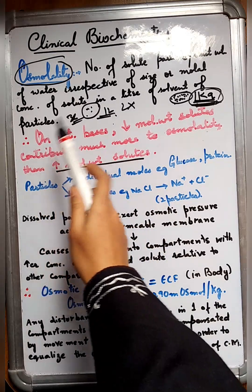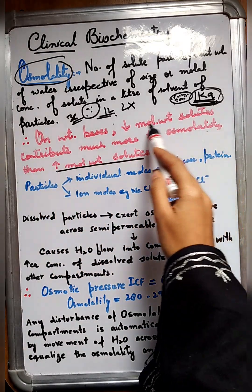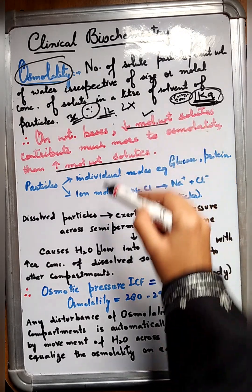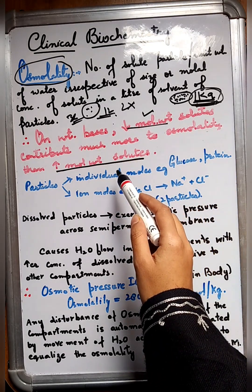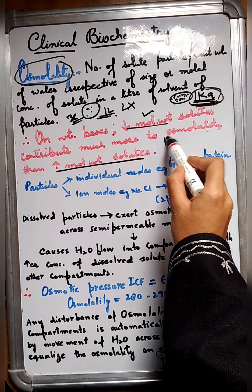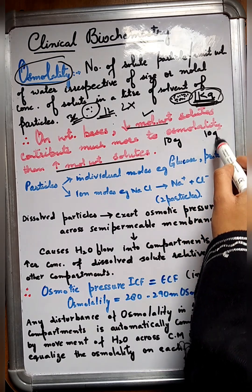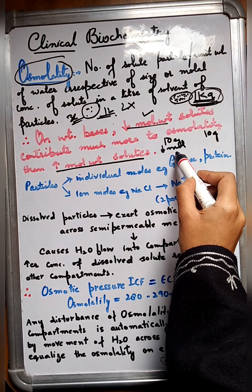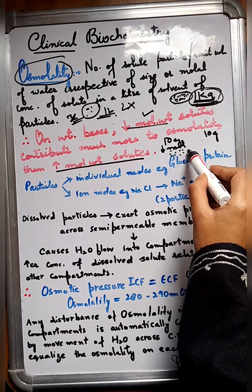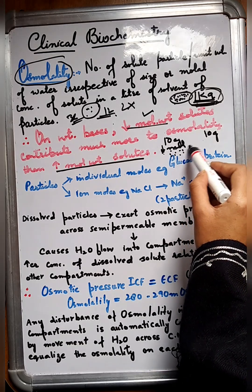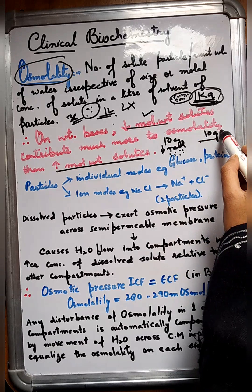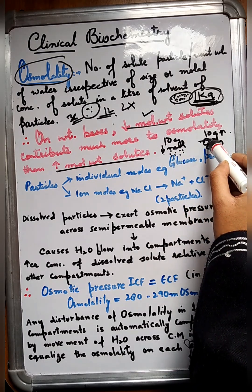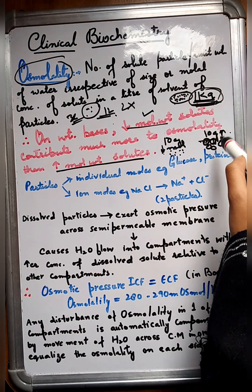If we have two solutes — one has low molecular weight and the other has high molecular weight — which contributes more to the osmolality? It's the low molecular weight solutes that contribute more to osmolality compared to higher molecular weight solutes. For example, taking just 10 grams of particles: for low molecular weight, particle size is small and more particles are available to exert osmotic pressure. For 10 grams of high molecular weight solutes, particle size is larger, so fewer particles are accommodated and they exert less osmotic pressure.